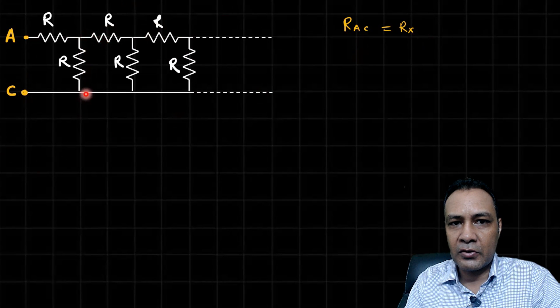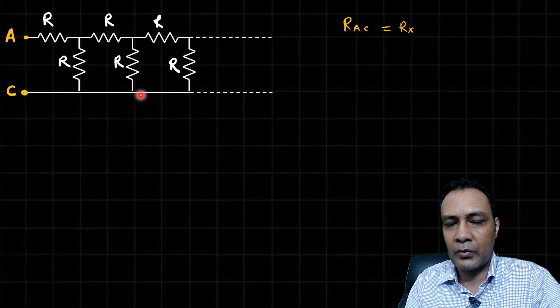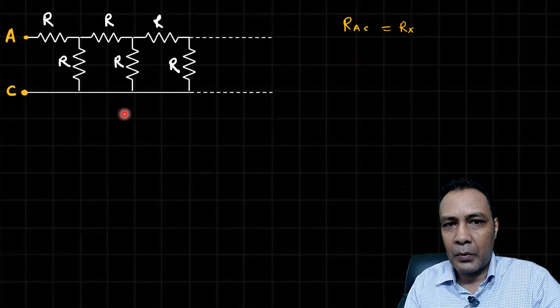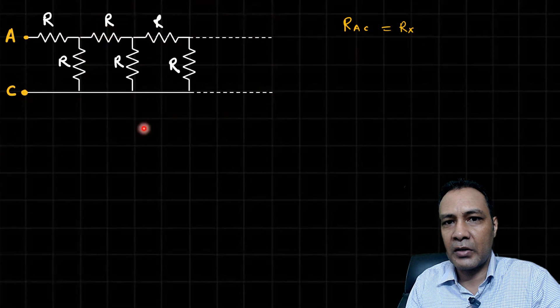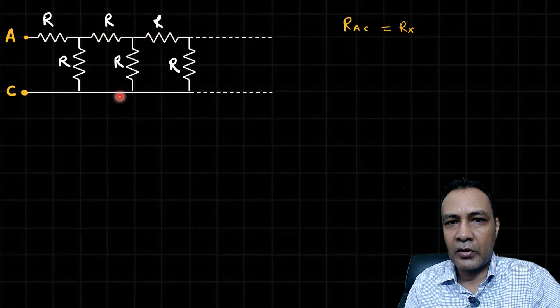The resistance between A and C is same as resistance between this and this point. For that matter, from here till infinity I can replace with R_X.